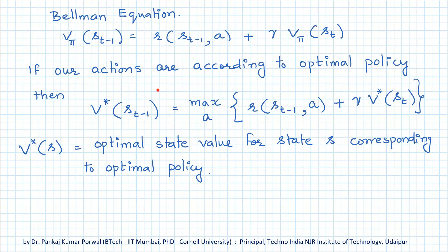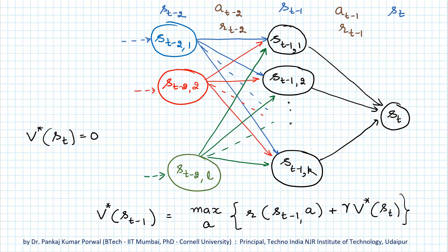If our actions are according to the optimal policy, then the state values become the optimal state values, and the Bellman equation for the optimal policy becomes: V*(s_{t-1}) equals the maximum with respect to action A of the sum of the immediate reward plus the present value of the optimal state value for the resulting state. Now, applying the Bellman principle of optimality, we start in the terminal state s_t. Because this is the terminal state, we do not take any actions and our game ends, so the state value for this state is 0, and therefore the optimal state value V*(s_t) is also 0.